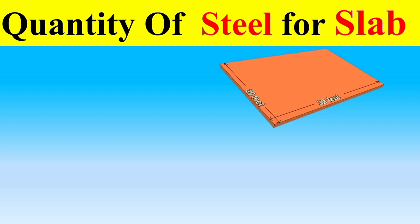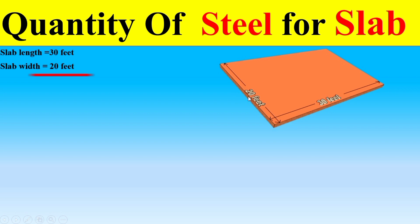Dear students, as you can see, we have a slab here. The length of this slab is 30 feet and the width is 20 feet. Now, if we want to find out the quantity of steel in this slab, we need to first understand how the steel is arranged.